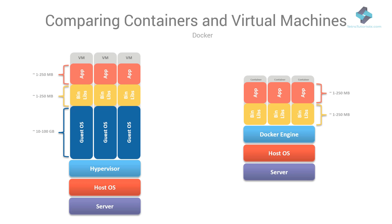In a containerized application, we do not have the burden of any guest operating system. The operating system is virtualized with the help of the Docker engine. We deploy only our application code, runtime, libraries, and dependencies in an isolated environment inside container images. Since these containers contain only the required bits, they are only a few megabytes in size and thus very efficient and portable. These containers are then run by the Docker engine, and we do not need to worry about the interaction or effects of the operating system — it is outside the scope of our container.